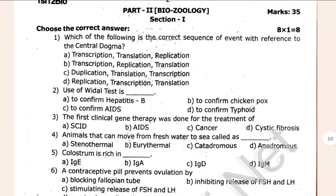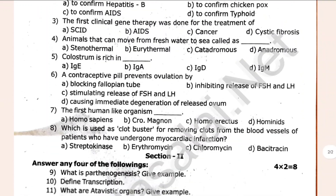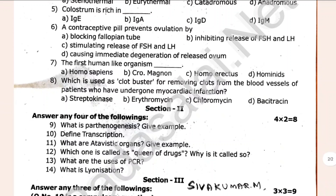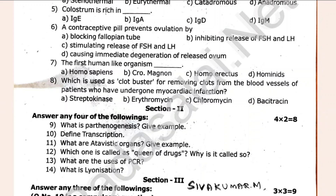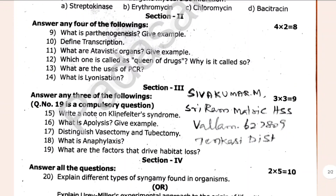Here is bio-zoology — 1-mark and 2-mark sections. Define transcription. What is parthenogenesis? Give an example. What are atavistic organs? Give an example. Which one is called as the coin of drugs, and why? What is the use of PCR? What is Lyonization? That covers 2-mark questions, and the following are 3-mark questions.